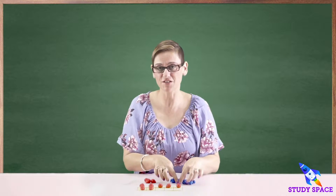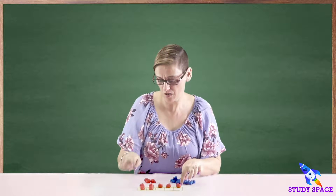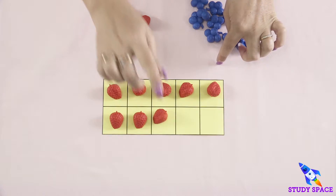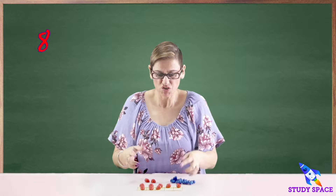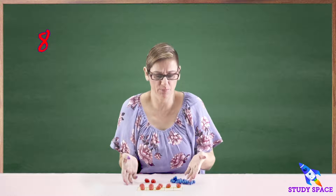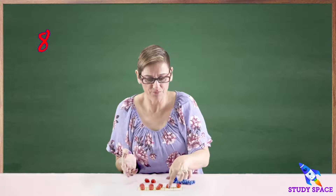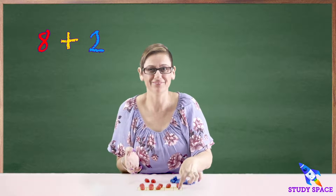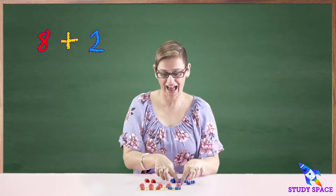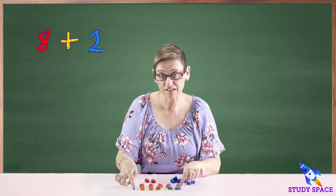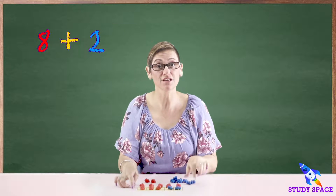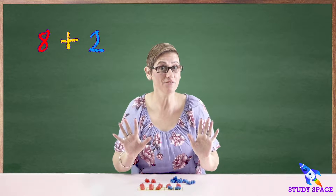Seven plus one more is eight. So how many blueberry friends am I going to need, boys and girls? Two. So eight plus two equals ten.